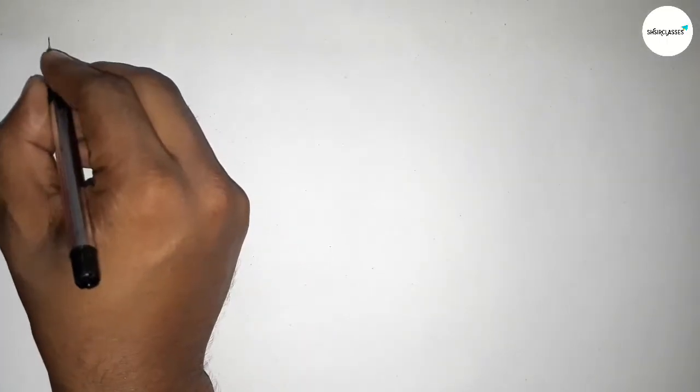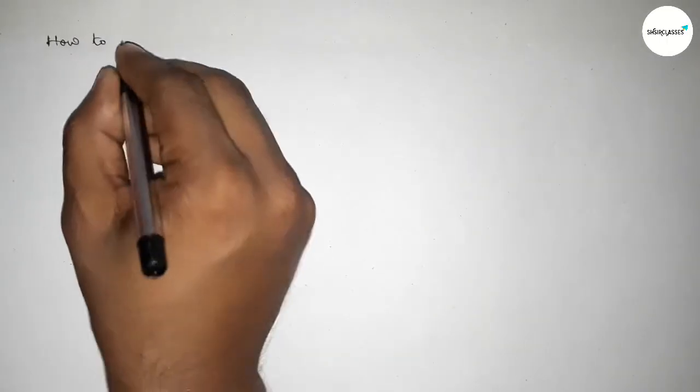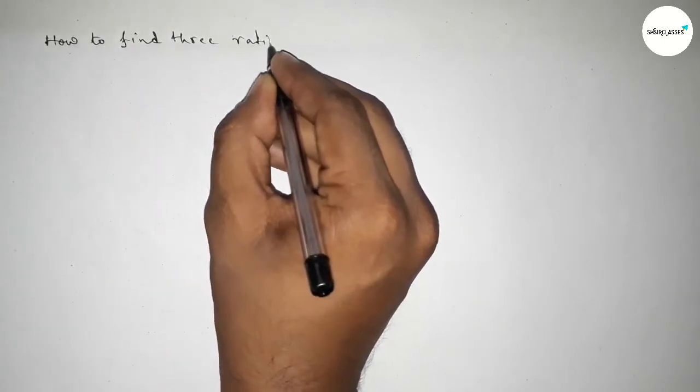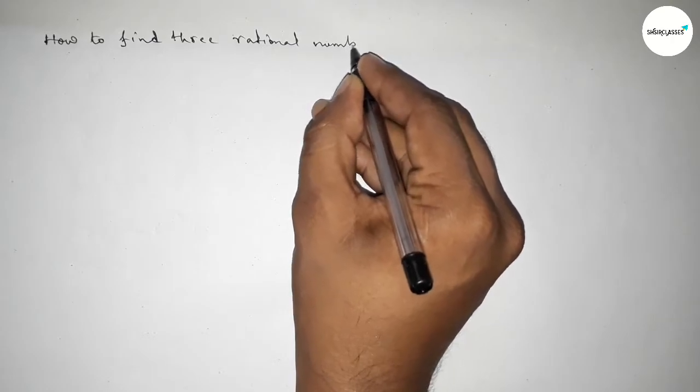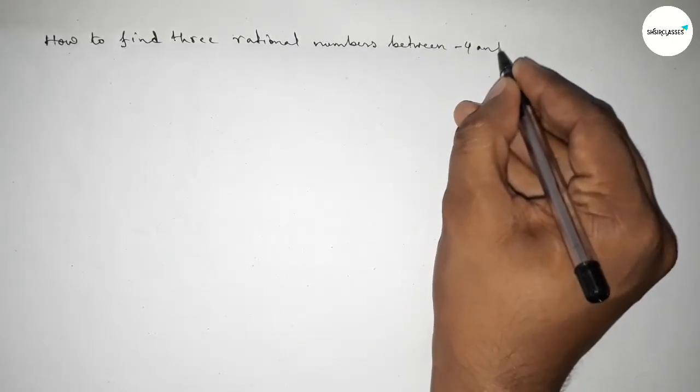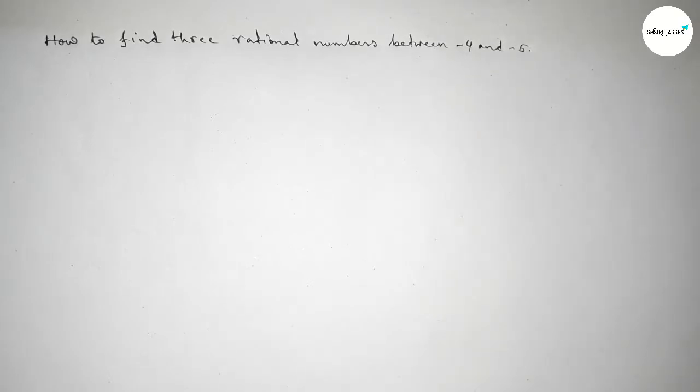Hi everyone, welcome to SI Share Classes. Today in this video, we have to find out three rational numbers between -4 and -5. So let's start the video.